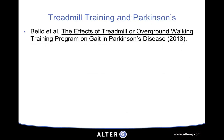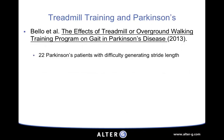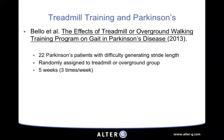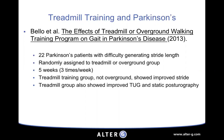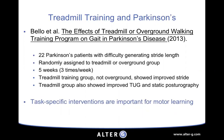This study by Bello et al. looked at treadmill training with Parkinson's patients. They had 22 Parkinson's patients with the typical shuffling festinating gait and poor stride length, randomly assigned to a treadmill or overground group. They trained for five weeks, three times a week. The treadmill training group — not the overground group — showed improvement in stride. The treadmill group also showed improvements in timed up and go and static posturography, leading to better balance, better stride length, less fall risk, and better quality of life.